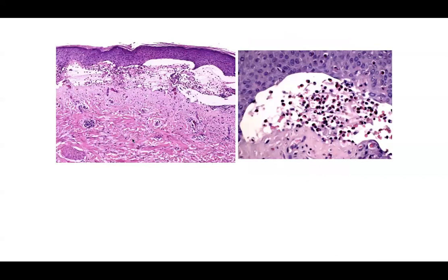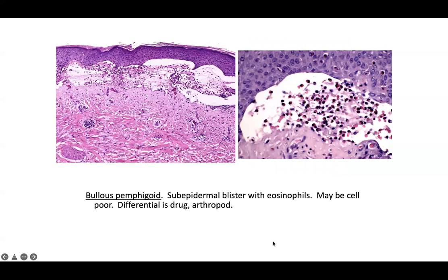Speaking of eosinophils within a blister cavity — this is more homogeneous: a subepidermal blister with abundant eosinophils — your classic bullous pemphigoid. The differential includes arthropod bites and drug reactions; remember you can have drug-induced bullous pemphigoid. Direct immunofluorescence perilesional should show pretty good linear IgG and impressive linear C3. In bullous arthropod reaction, you would not get that DIF pattern. Recognizing eosinophils within the infiltrate is absolutely crucial.